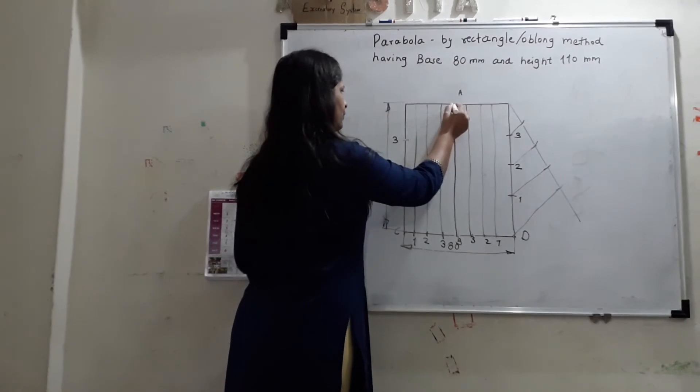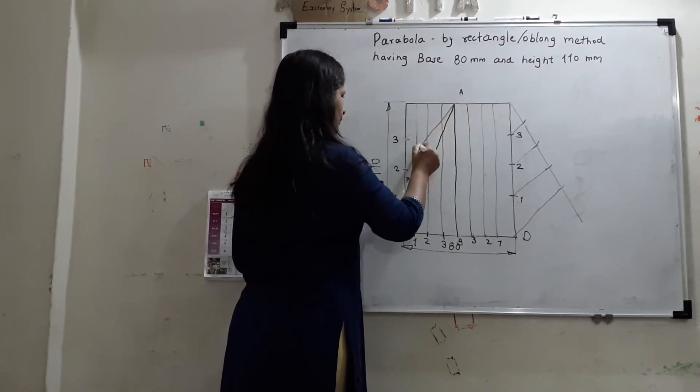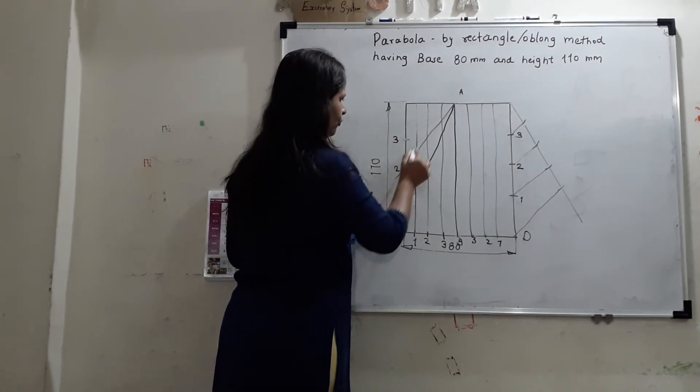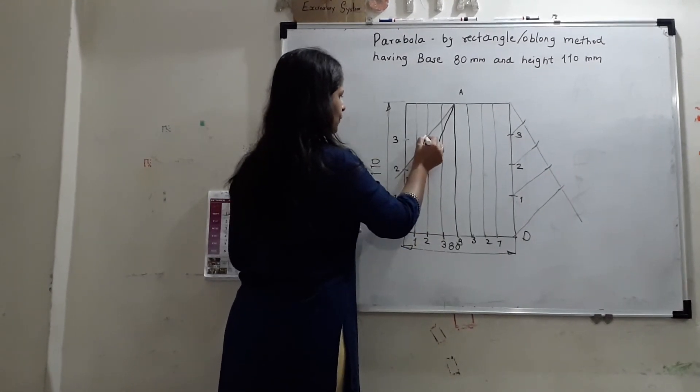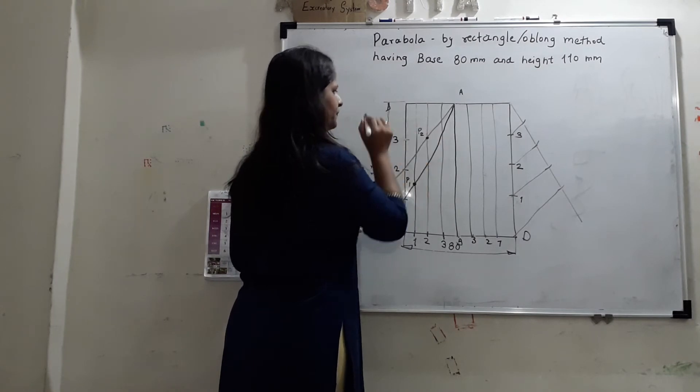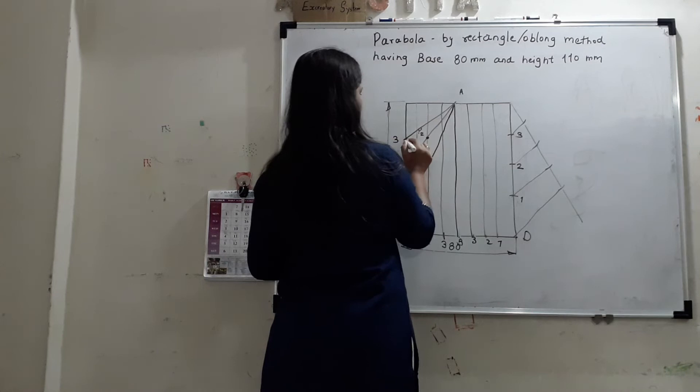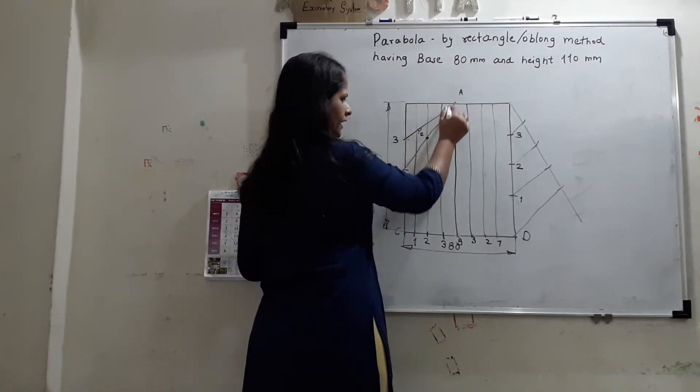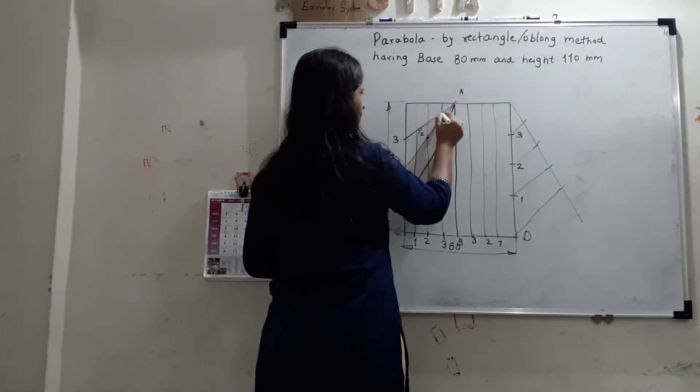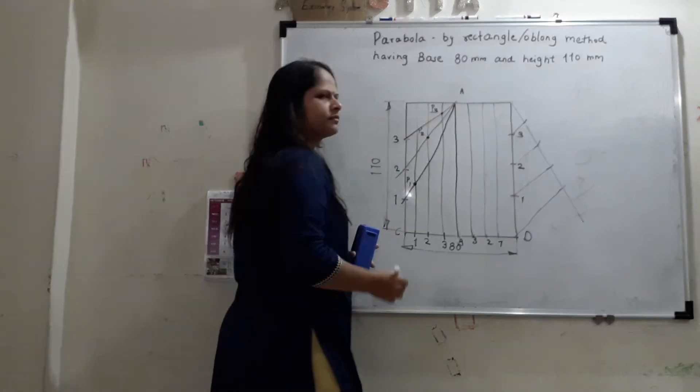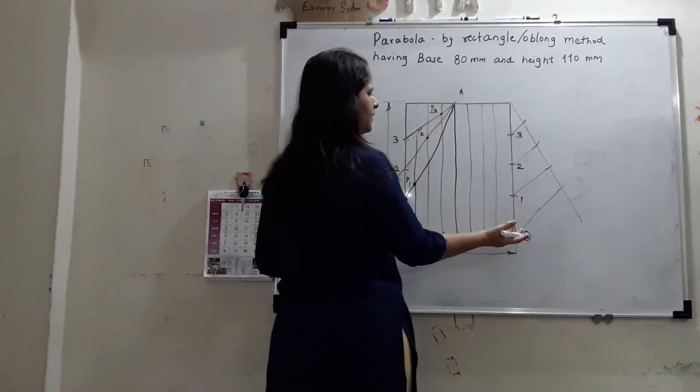Now, join A to 2. This is line of 2 and this is line passing through 2. So, we will be getting E2 here. Now, this is line of 3. So, we will join 3 here. This is line passing through point 3. And this is line passing through point 3. So, I am getting point E3 here.